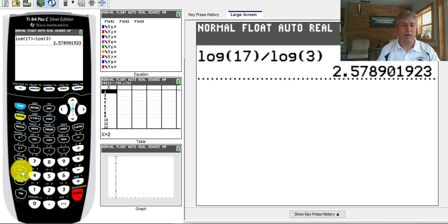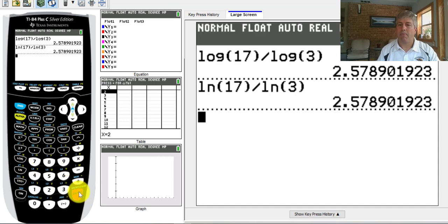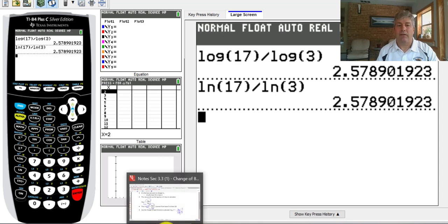And you could do it with the natural log key as well. So natural log 17, close your parentheses, divided by natural log 3. And we get the exact same value. So there's the introduction to the change of base formula. And with that, I will see you in class.